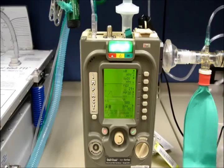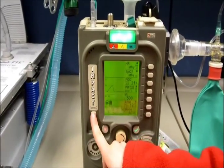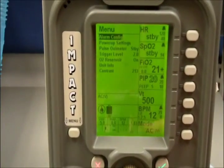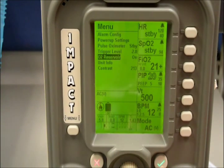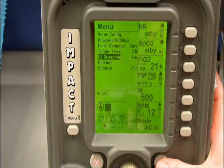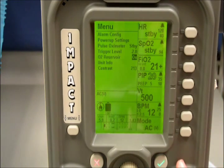To use low flow on the ventilator, you will select menu, scroll to O2 reservoir, click on O4, hit the check button, you will go to ON, hit the check button.